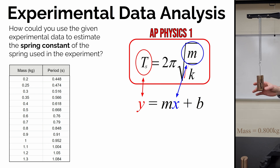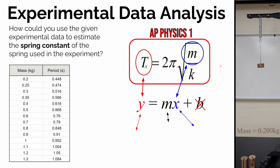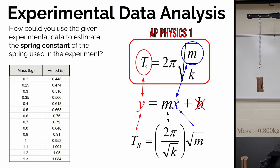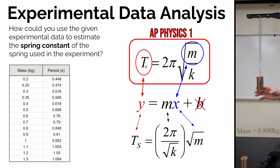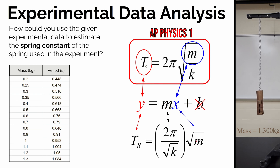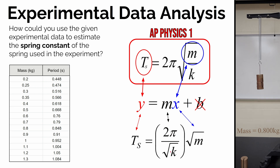If we did that, what would the slope and y-intercept be? There's no added term in the equation, so there's no y-intercept. If we rearrange the equation so that period equals something times the square root of mass, we get: period = (2π / √k) × √m. Comparing to slope-intercept form, period is on the y-axis, square root of mass is on the x-axis, and the slope of that graph equals 2π divided by the square root of k.